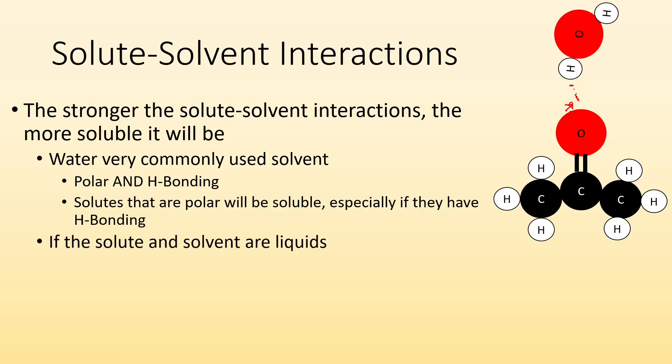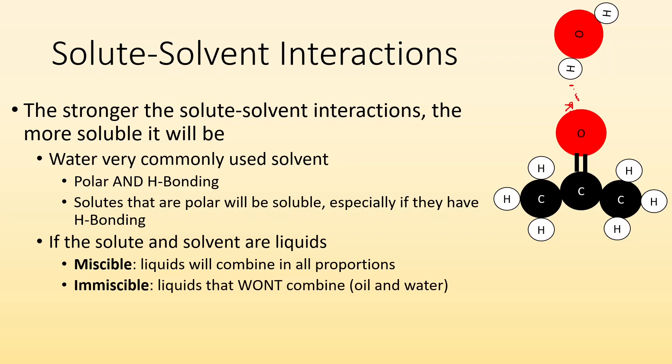If the solute and solvent are both liquids, we have special vocabulary. Miscible means liquids will combine in all proportions - basically they're soluble completely with each other. Immiscible means liquids that won't combine. Think oil and water, they're immiscible. You do all you want, oil and water are not going to dissolve because it's a non-polar thing.